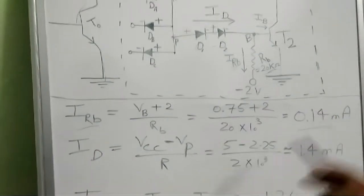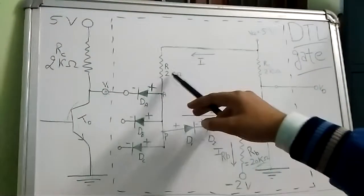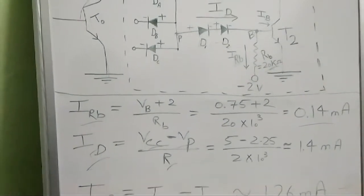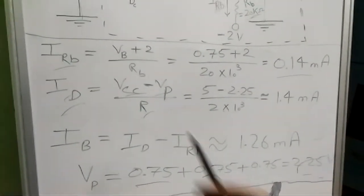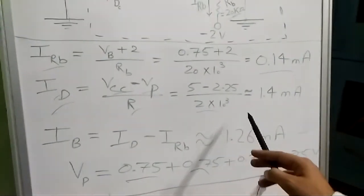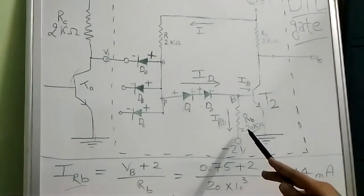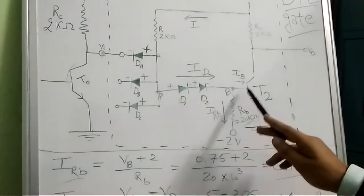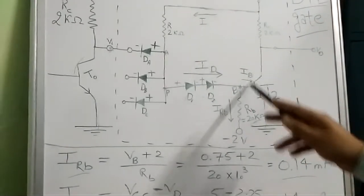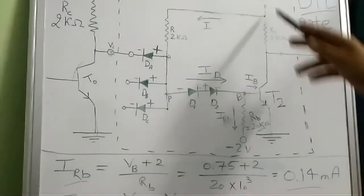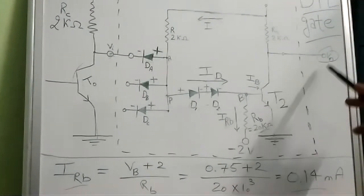IRB is calculated as (VB − (−2V)) / RB = (0.75 + 2) / 20kΩ = 0.14 mA. ID is calculated as (VCC − VP) / R = (5 − 2.25) / R = 1.4 mA. IB = ID − IRB = 1.4 − 0.14 = 1.26 mA. This 1.26 mA is sufficient to drive T2 into saturation, so V0 becomes 0.2V, which is logic level 0.